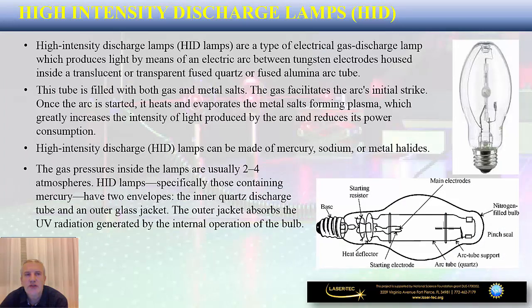The next type of light source is HIDs, or high-intensity discharge lamps. These are gas discharge lamps that produce light by means of an electric arc and plasma formation. The electric arc is formed between tungsten electrodes housed inside a glass bulb made of fused quartz or fused alumina. The tube is filled with both gas and metal salts, where gas facilitates the initial strike of the arc. Once the arc starts, the temperature rises and the metal salts begin evaporating and forming plasma.